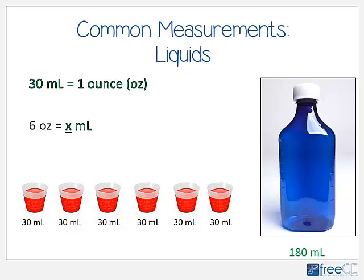Remember that 30 milliliters equals one ounce, and we need six times that amount. So 30 times 6 is 180 milliliters. You can also look at it visually: six 30-milliliter cupfuls of medicine add up to 180 milliliters total.